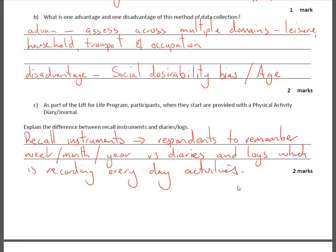What is one advantage and one disadvantage of this method of data collection? Advantage: we're able to assess across multiple domains — leisure, household, transport, occupation. Disadvantage: there is a social desirability bias, meaning people are more likely to indicate they're doing more physical activity than they actually are because they believe that is the better response. Also, older adults participating may not have been able to recall appropriately to complete the survey satisfactorily.